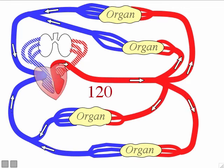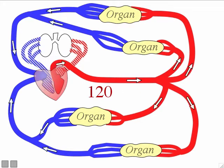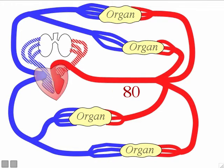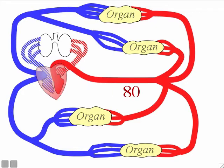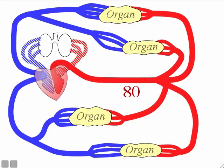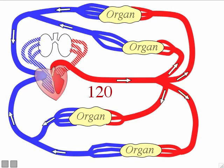The average blood pressure numbers of an average adult at rest are 120 over 80. 120 is the average systolic pressure and 80 is the average diastolic pressure. You always give the systolic number first, followed by the diastolic number, with 'over' between them. It varies from person to person — one person might be 128 over 84, another 115 over 69 — but on average for adults, resting blood pressure is 120 over 80.